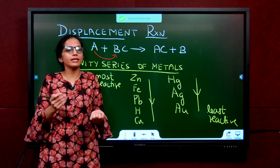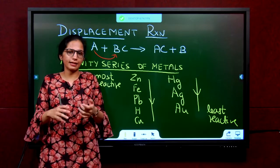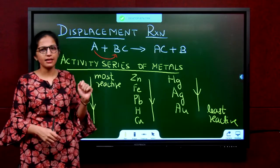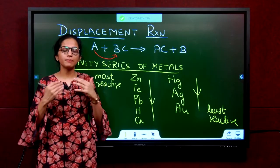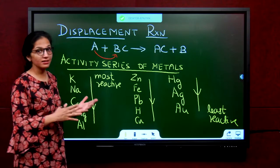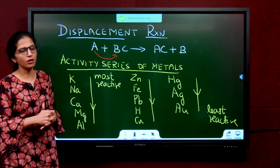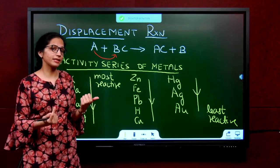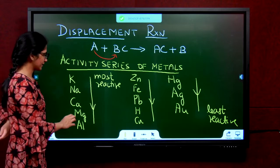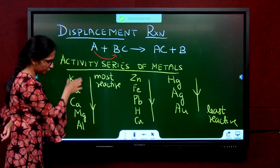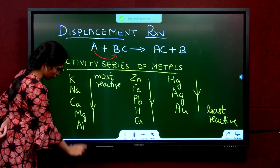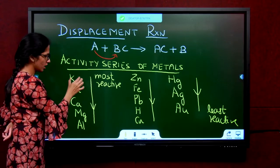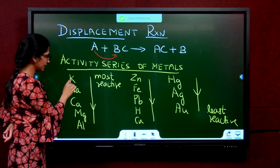How do we decide who is more reactive and less reactive? You have something called the activity series. It is in general for all elements, but we study the activity series for metals. You will study about this again in the metals and non-metals chapter. For now, just take this down. This is the activity series.